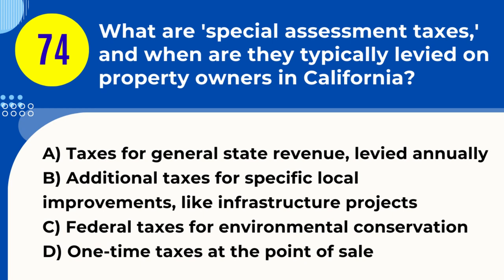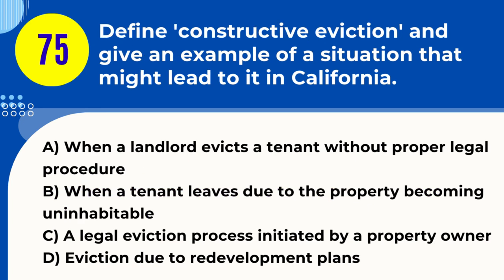Question 74. What are special assessment taxes, and when are they typically levied on property owners in California? A. Taxes for general state revenue, levied annually. B. Additional taxes for specific local improvements, like infrastructure projects. C. Federal taxes for environmental conservation. D. One-time taxes at the point of sale. Answer: B. Explanation. Special assessment taxes in California are additional taxes levied on property owners for specific local improvements or projects, such as infrastructure upgrades, street repairs, or public utilities. These taxes are typically assigned to properties that directly benefit from the improvement, and the amount is based on the property's assessed value or the improvement's impact.